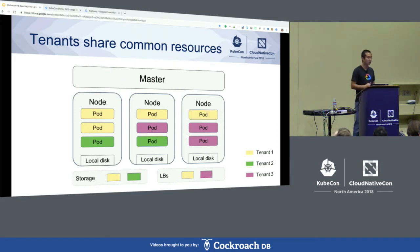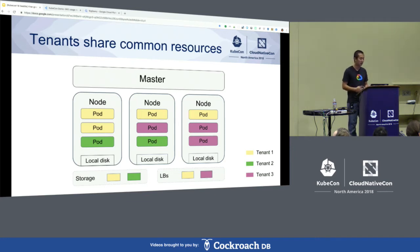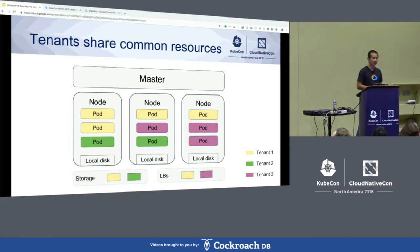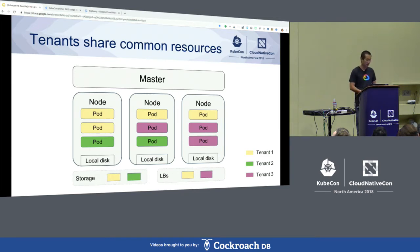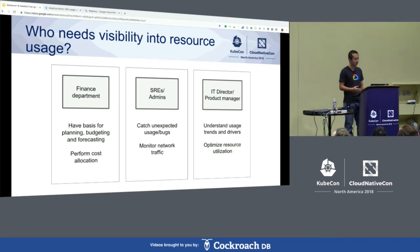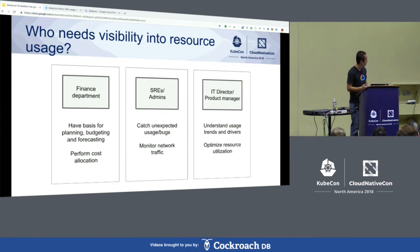A tenant doesn't need to care — and shouldn't care — about the details of resource allocation and consumption within a cluster, such as where the pod is running, whether introducing extra replicas of a certain pod causes new nodes to be added into the cluster, or what kind of network resources are provisioned for the workloads. But still, there are some people who really care about the resource usage within the Kubernetes cluster and want visibility into resource usage.